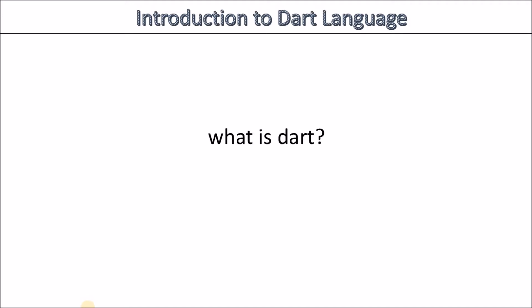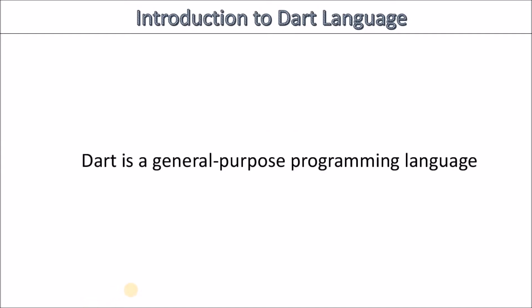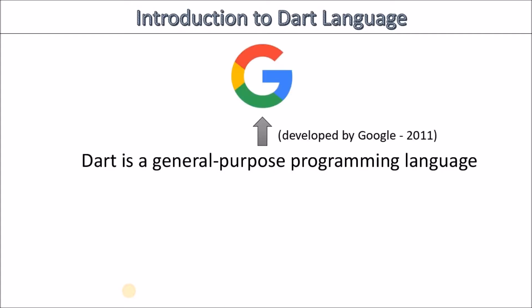The simplest way to explain Dart is by saying that Dart is a general-purpose programming language. Of course you have a lot of things you can put into this definition, but for now it's enough to know that Dart is a general-purpose programming language. Dart was developed by Google and it was developed in 2011, so it's a relatively new programming language.